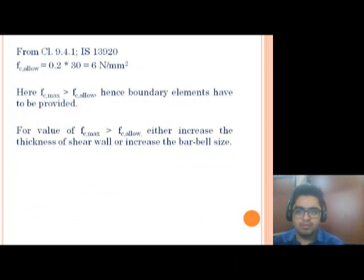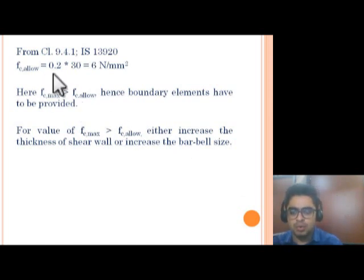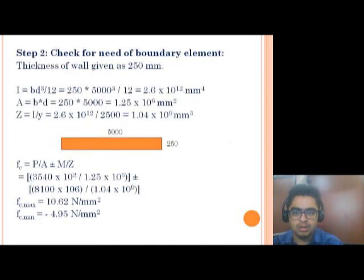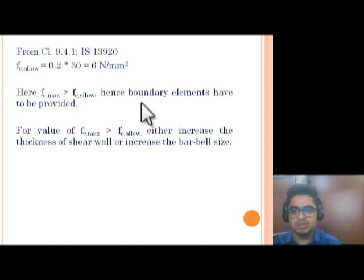From IS 13920 clause 9.4.1: where the extreme fiber compressive stress in the wall due to factored gravity load plus factored earthquake force exceeds 0.2·fck, boundary elements shall be provided along the vertical boundaries of the wall. In our case, the allowable stress is 0.2 × 30 = 6 N/mm². The maximum stress obtained is 10.62 N/mm², which exceeds the allowable 6 N/mm². Therefore, there is a need to provide boundary elements.